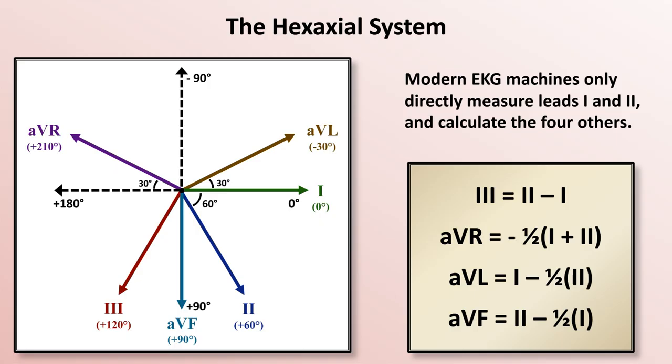So far, all of the leads I have been focusing on, that is, the six limb leads, all lie in the same plane known as the frontal plane. It is the imaginary plane that divides the body into front and back halves.